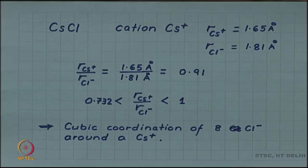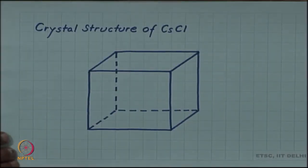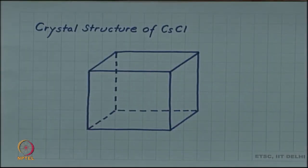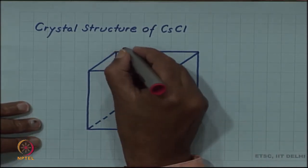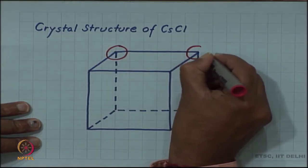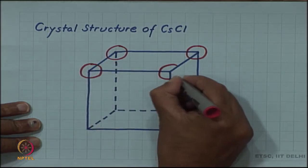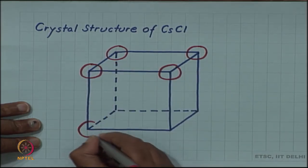It is possible to have 8 chloride ions around a caesium ion if we have a cubic unit cell with chlorides sitting at the corners of the cube. At each of the 8 corners, place a chloride.